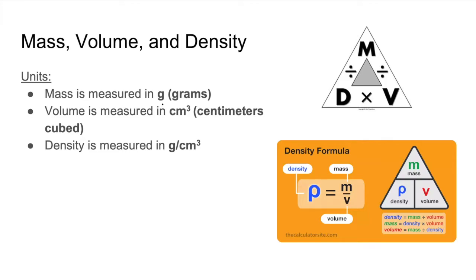So mass is measured in grams, and then volume is measured in centimeters cubed. So we know that density is measured in grams over centimeters cubed.